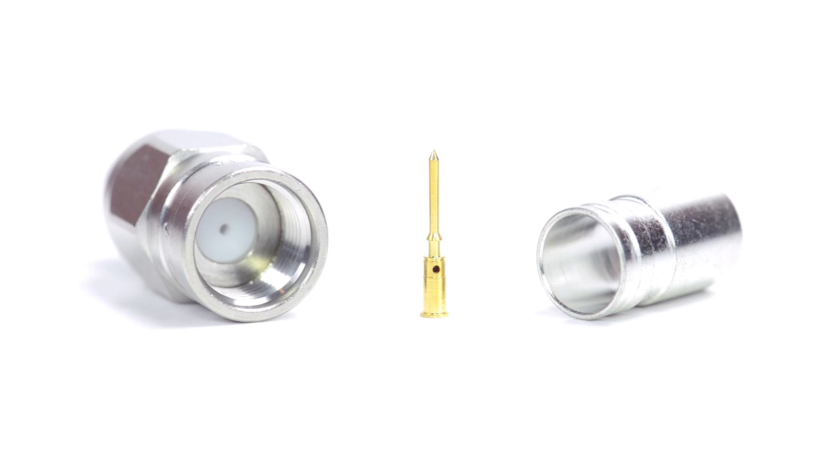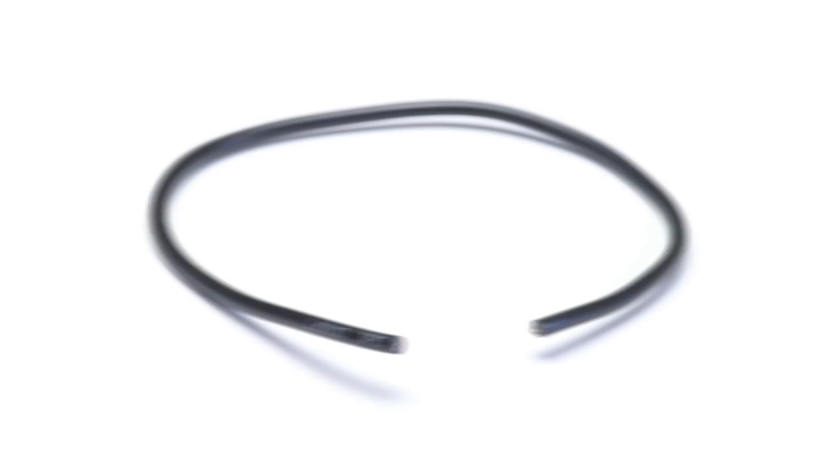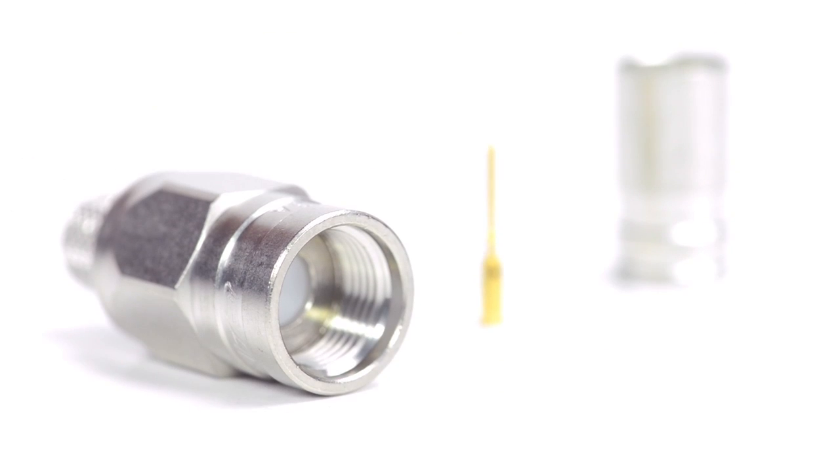The three piece connector consists of the connector housing, pin, and ferrule. For this installation you will need a coax stripper, coax cable, a soldering iron, a crimp tool, and the F-Type connector.